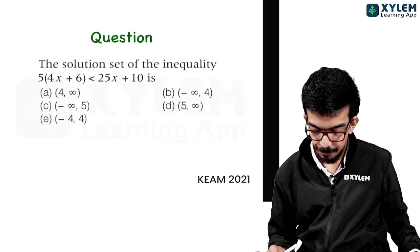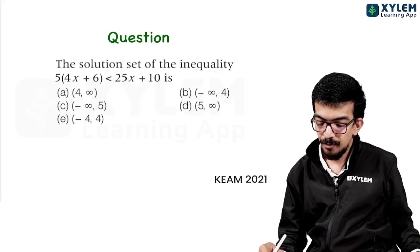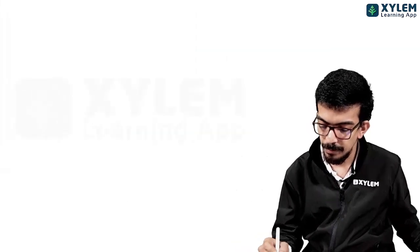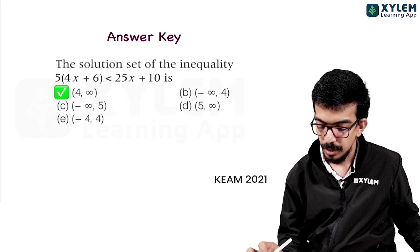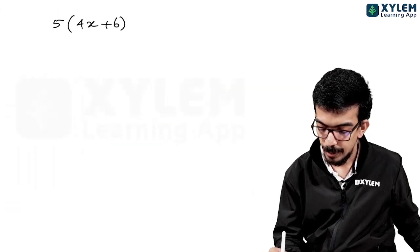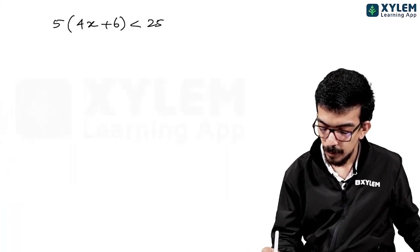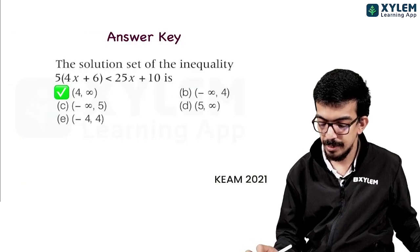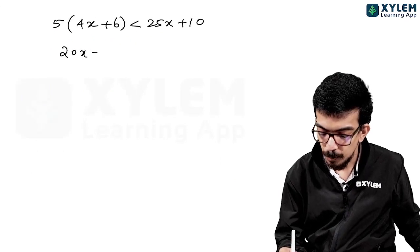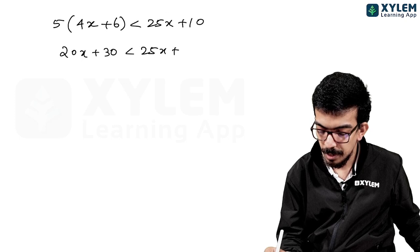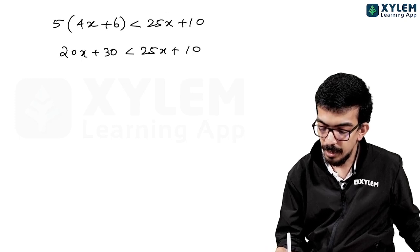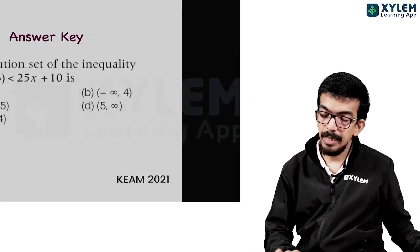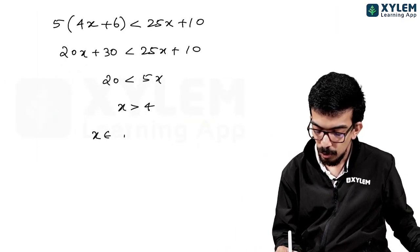Last question: the solution set of the inequality 5(4x + 6) < 25x + 10. Expanding: 20x + 30 < 25x + 10. Rearranging: 20 < 5x, so x > 4. Therefore the solution set is (4, infinity).